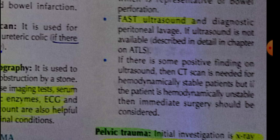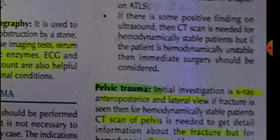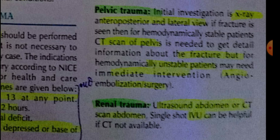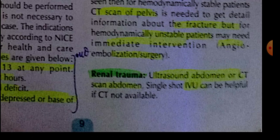For abdominal trauma, we perform erect chest X-ray to detect free air, and FAST ultrasound or diagnostic peritoneal lavage. If the patient is hemodynamically stable, ultrasound suffices; if unstable, CT scan is done and surgery may be required. For pelvic trauma, X-ray anteroposterior and lateral views are taken. If hemodynamically unstable, CT scan of pelvis is performed to identify fractures and associated injuries, including renal trauma.